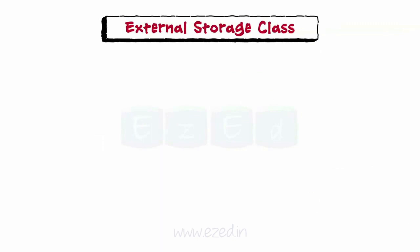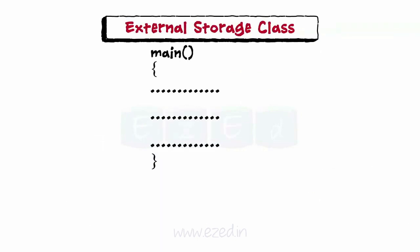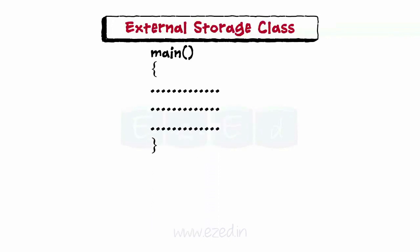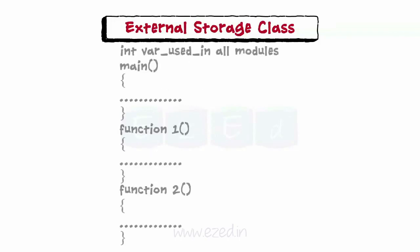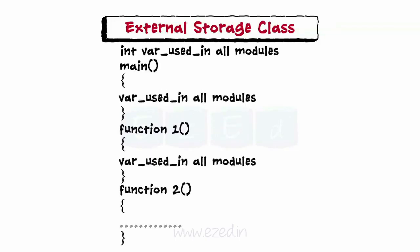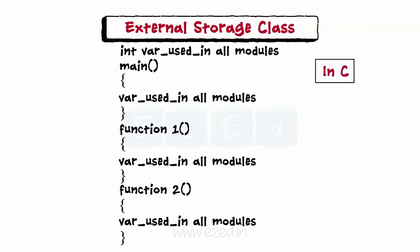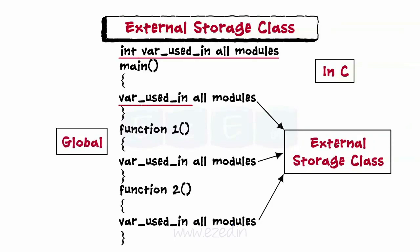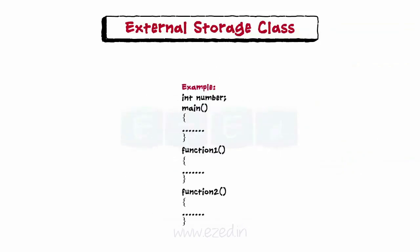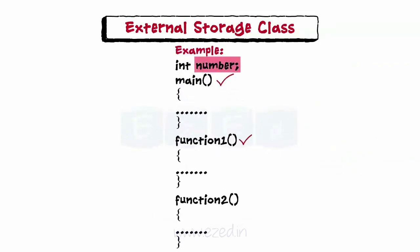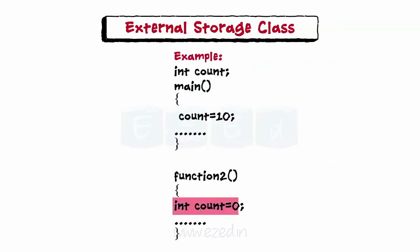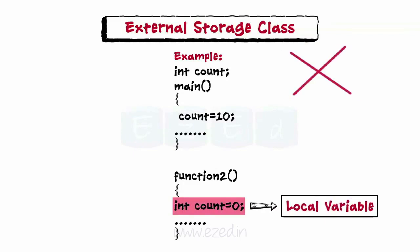Moving on to external storage class variables. A program in C, particularly when it is large, is broken down into smaller programs. After compiling, each of these program files are joined together to form a large program. These small program modules may need some variables that are used by all of them. In C, such a provision is made by specifying these variables as external storage class variables, making them global and accessible to all the small program modules. Hence, the variable number is accessible in all three functions as it is declared as an external variable. When function2 references count, it is the local variable that is referred to, not the global variable.